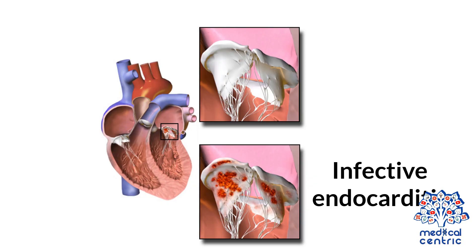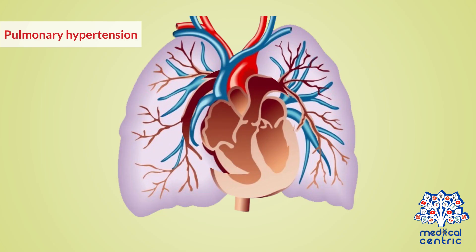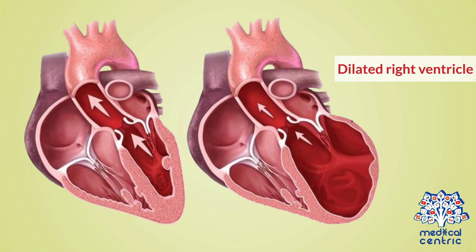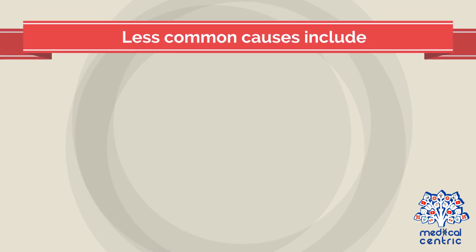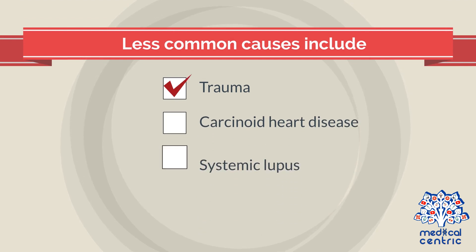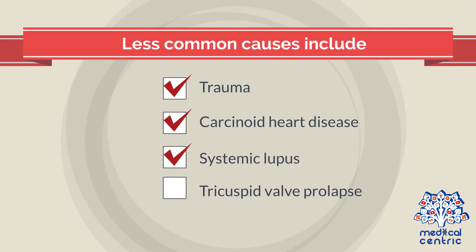Tricuspid valve disease is caused by infective endocarditis, rheumatic fever, pulmonary hypertension, dilated right ventricle, and tumors of the heart. Less common causes include trauma, carcinoid heart disease, systemic lupus, and tricuspid valve prolapse.